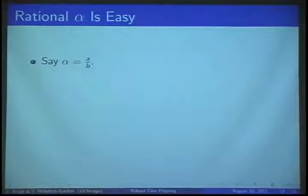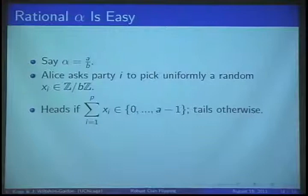Any rational bias is easy to construct using finite groups. Alice asks for a uniform group element from each party and multiplies them. If the product lies in a specified set, she returns heads, otherwise tails.